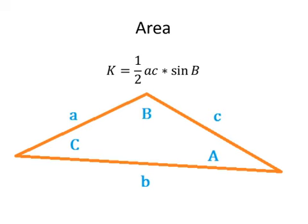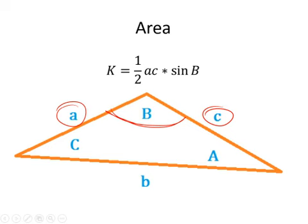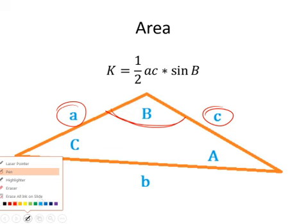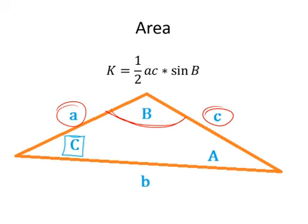So the formula is 1/2 times a times c times sine of B. To find the area, you take two of the sides and the angle that's in between those two sides. So if I use sides a and c, I have to use angle B. If I wanted to use angle C, I'd have to use sides a and b. If I wanted to use angle A, I'd have to use sides b and c. It's the two sides that create the angle that you have to use in this formula.